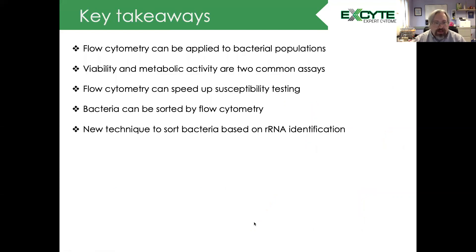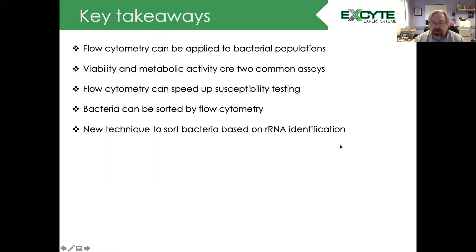Key takeaways: flow cytometry can be applied to bacterial populations even though they are smaller than our normal limits of detection. Viability and metabolic activity are two common assays, and we can count bacteria without culturing them on a plate. Flow cytometry can speed up susceptibility testing, as demonstrated by the M. tuberculosis studies. Bacteria can also be sorted by flow, and a new technique to sort bacteria based upon RNA identification has been identified and validated. If you're looking to characterize different populations, this may be a great tool to explore.